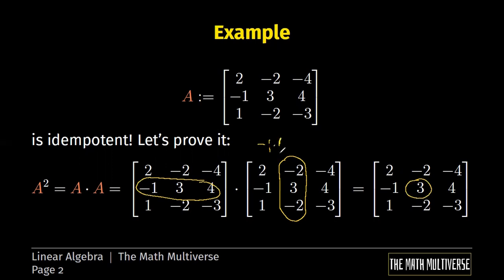Minus 1 times minus 2 plus 3 times 3 plus 4 times minus 2. And the result is exactly the number 3 that we have. Now we can continue.